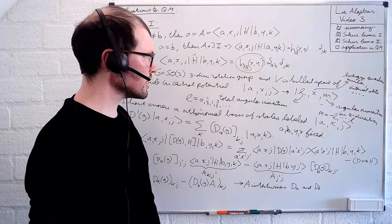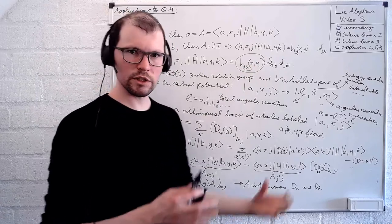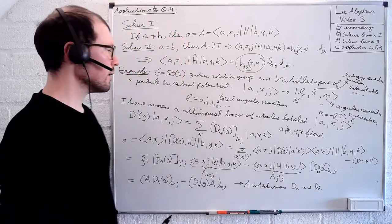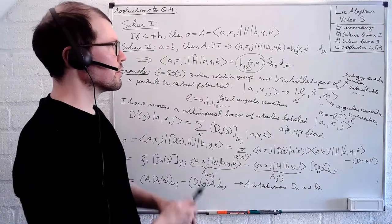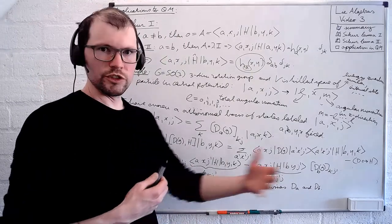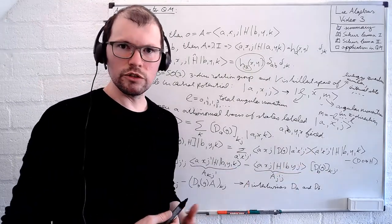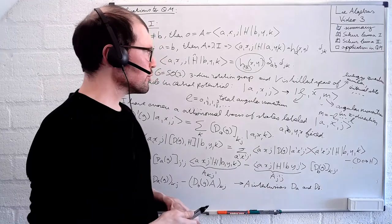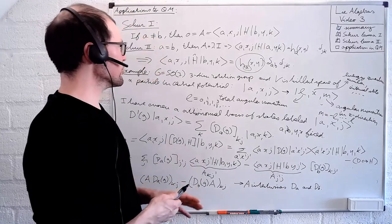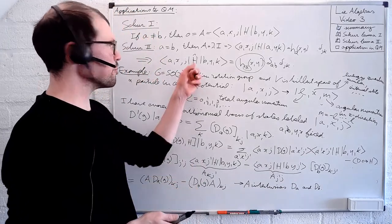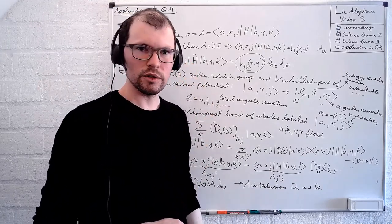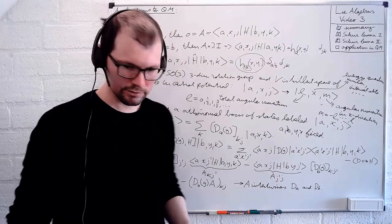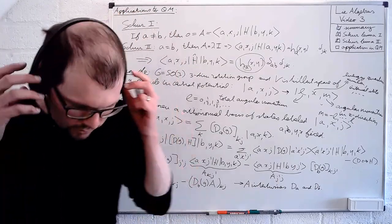What Schur's Lemma tells us is that without even looking at the Hamiltonian of the hydrogen atom, we can already deduce that within this basis, the matrix elements are diagonal in L and proportional to the identity in M. The eigenvalues of the Hamiltonian can only depend on L (the irreducible representation label) and not on M — plus the energy quantum number and internal state. This is where all the additional physics lies, and anything still invariant under three-dimensional rotations can only affect these remaining quantum numbers. That brings us to the end of this video.